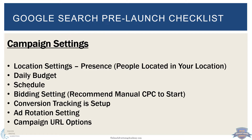For your bidding setting, we recommend manual bidding — it's called Manual CPC inside Google. Even if you want automation, Google needs some data before it can optimize for conversions or target CPA. You could do Maximize Clicks right away if clicks are your goal, but most of the time you're going for conversions, so manually set your bid. You can always switch to automation later, or leave it on manual permanently.